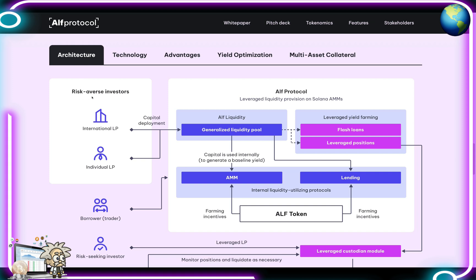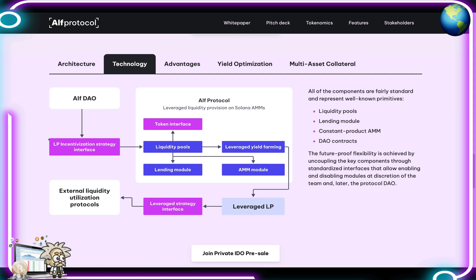There are some illustrations showing how the ecosystem works. Under the architecture tab, we have risk-averse investors, the institutional LP, and the individual LP — all connected to capital deployment flowing into ALPH liquidity, leveraged yield farming, flash loans, and leverage positions, as well as AMMs, lending, and the ALPH token. On the technology tab, we have the ALPH DAO flowing into the LP incentivized strategy interface and the full ALPH protocol with token interface, liquidity pools, lending module, leverage yield farming, AMM module, and external liquidity utilization protocols.